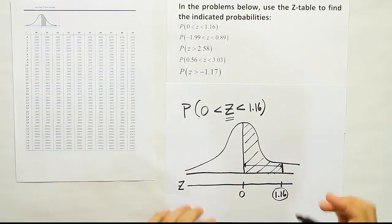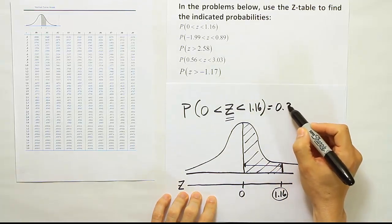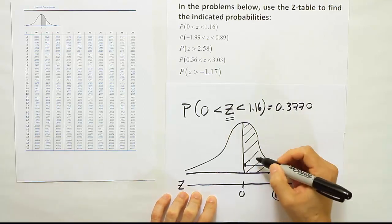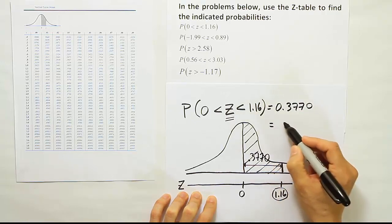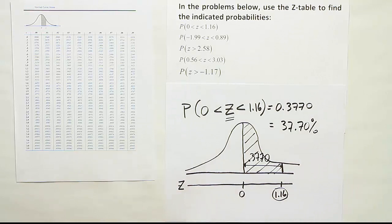Okay, so now we see from the table that the answer is 0.3770. This is the area we get when we look up 1.16, 3770. And remember, that's the same as 37.70%. So that's the solution for our first problem of the 5.